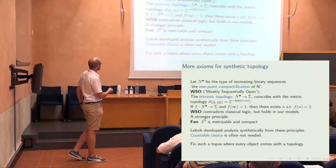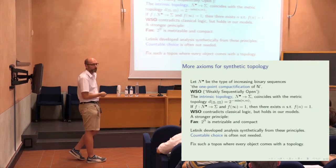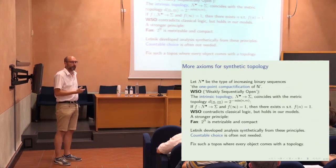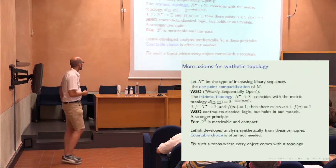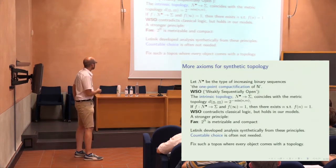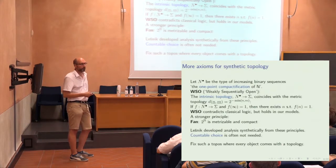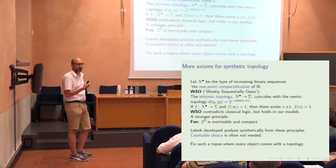This axiom contradicts classical logic, but it holds in the models I'll present. So we're adding non-classical axioms to our topos. There's a stronger principle, namely that Cantor space is actually metrizable and compact. This holds in our models, and very naturally in these big toposes, because you have a full and faithful embedding of the topological spaces into the topos.